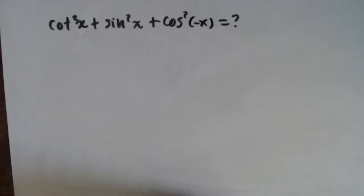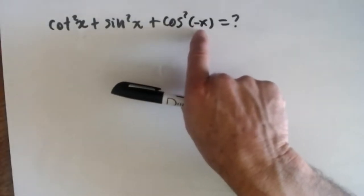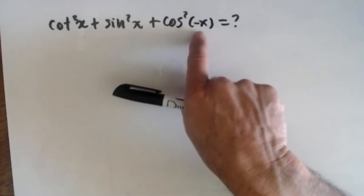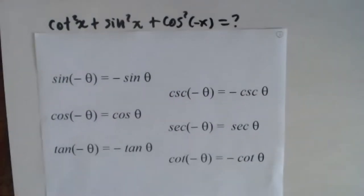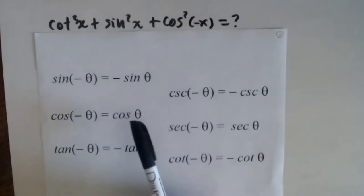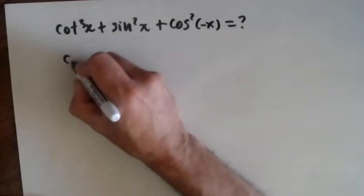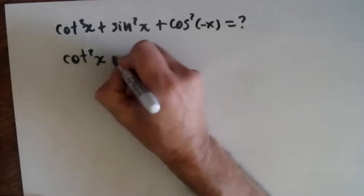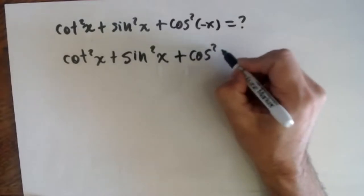Remember the identities we have. We observe this expression and we see that we have the trigonometric value for a negative angle. So I have to go to my formula chart, my formula booklet, and look for those identities. I see that the cosine of a negative angle is exactly the cosine of the positive angle. So we're going to change this one. So we have cotangent squared of x, plus sine squared of x, plus cosine squared of x.